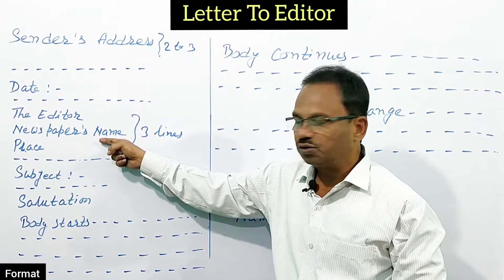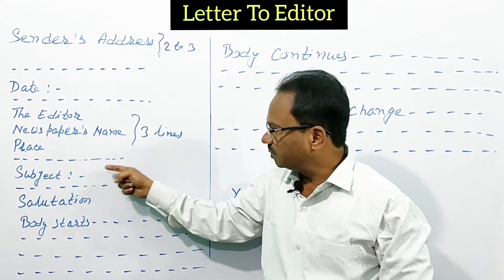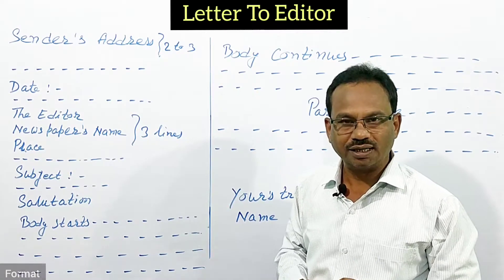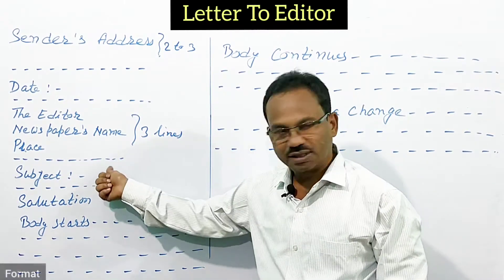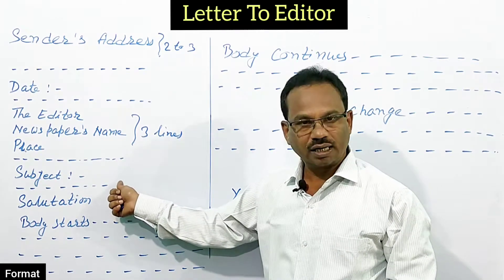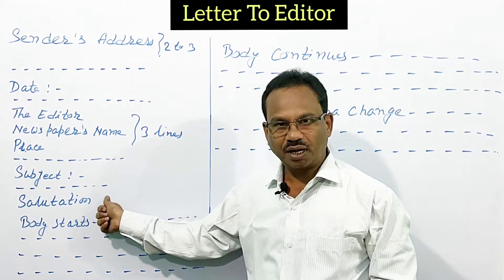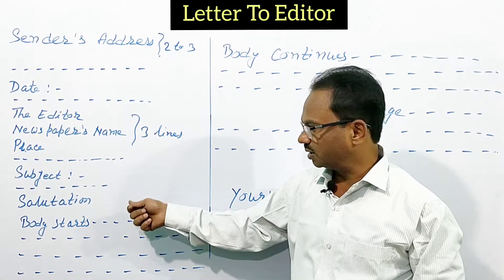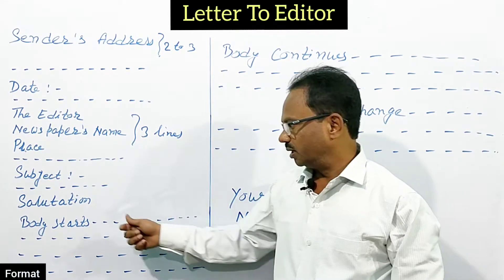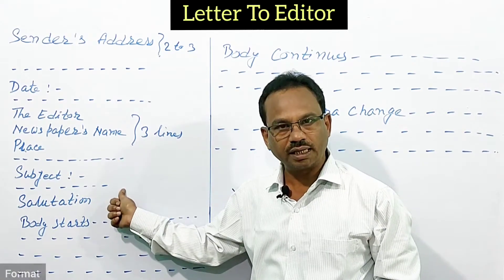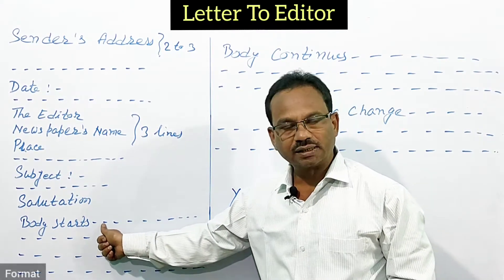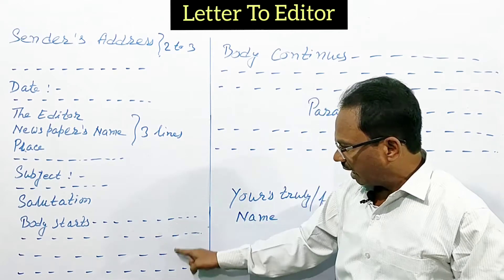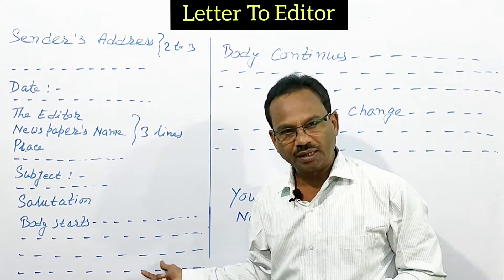After the editor's name, newspaper, and place, you leave a line and then write the subject. In the subject line, you clearly mention what your problem is. Then you leave another line. Below that comes the salutation, and exactly under the salutation, the body of the letter starts — typically three to four lines or about five sentences.